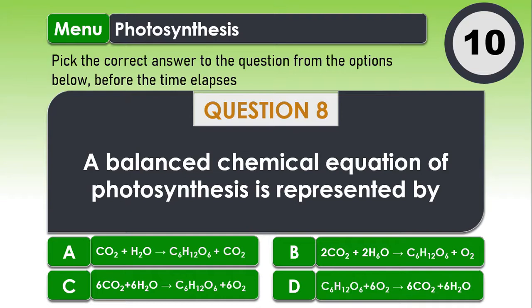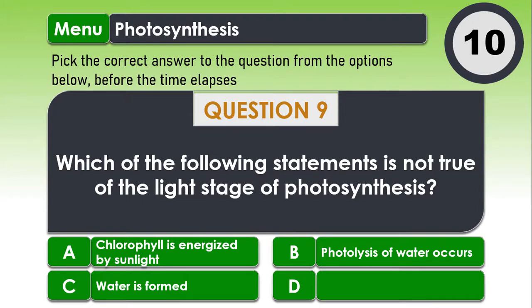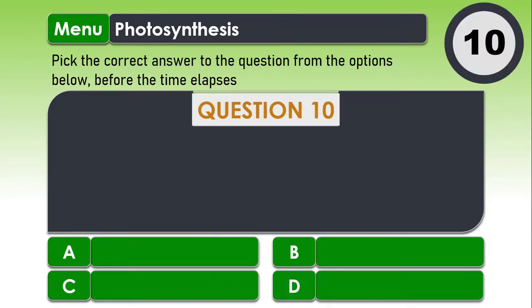D. C6H12O6 plus 6O2 to give us 6CO2 plus 6H2O. Question 9. Which of the following statements is not true of the light stage of photosynthesis? A. Chlorophyll is energized by sunlight B. Photolysis of water occurs C. Water is formed And D. Carbon dioxide is reduced by hydrogen. The correct answer is D. Carbon dioxide is reduced by hydrogen.